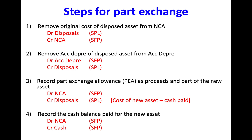SFP means statement of financial position and SPL refers to statement of profit and loss. The second step is to remove the accumulated depreciation of a disposed asset from the accumulated depreciation account. This account has a credit balance in the SFP, and therefore to reduce this you debit the accumulated depreciation account and credit your disposals.